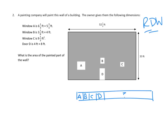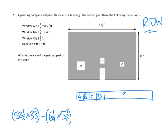This is going to be a long one. The first thing we need is to start with the whole — that area is the length times the height. So the first part of the math sentence would be 52 and one-half times 33. Then we need to subtract window A: six and one-fourth times five and three-fourths. We also need to subtract window B: three and one-eighth times four. Then subtract window C — happily, they've already figured that one out for us: subtract nine and one-half. And finally, subtract the doorway: four times eight.